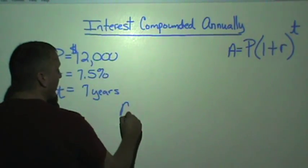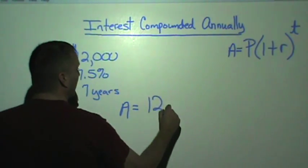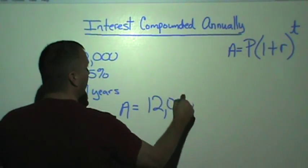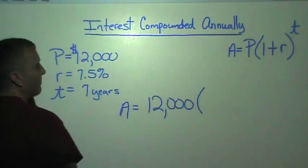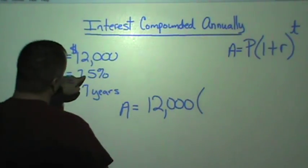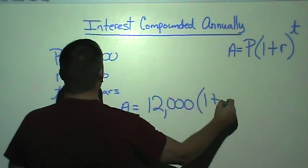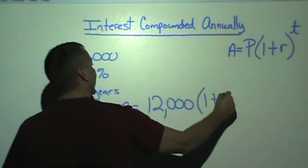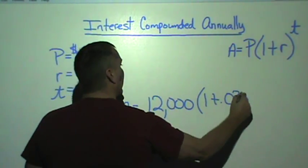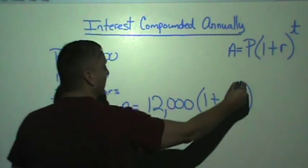All right. We're solving for A here. We have a principal of $12,000 times one plus the rate. On the rate, we need to move the decimal two places. So one plus 0.075 and raise it to the amount of years that we're going to do. We're going to leave it in there, and this time is seven years.